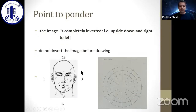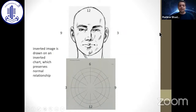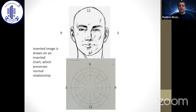In this diagram we can see the 12 o'clock position, 3 o'clock position, 6 o'clock position, and 9 o'clock position. When the Amsler-Dubis chart is placed correctly, 12 o'clock should be up, 6 o'clock should be down, 3 o'clock towards the right, and 9 o'clock towards the left. We invert the chart and place it on the chest or beside the arm of the patient. So an inverted image is drawn on an inverted chart, which preserves normal anatomical relationships.